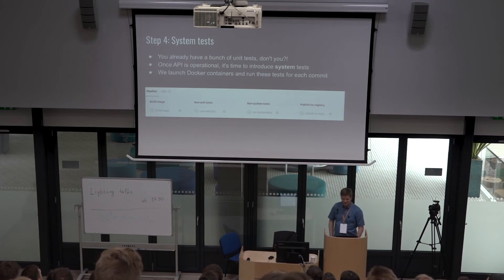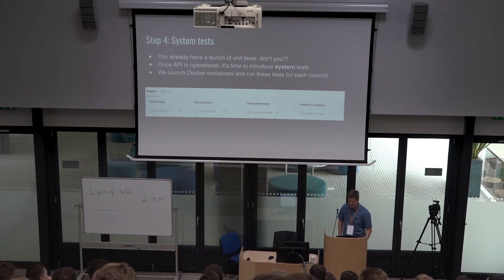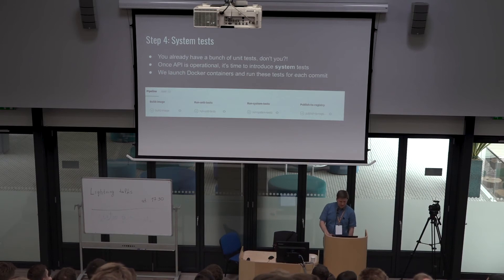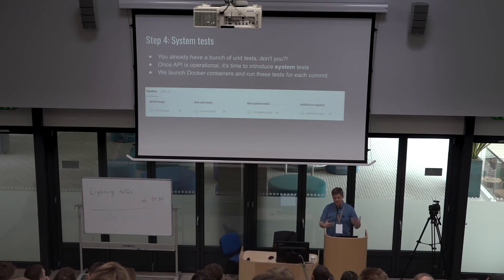The fourth step is to introduce system tests. You probably have a bunch of unit tests, but once the API is operational, it's really time to introduce system tests. This is a snapshot of our build pipeline — we use Docker containers to run these tests. In our case, a system test means we put in an image, go through all the predictions, see the output, and compare it to the expected output. That's a full system test.